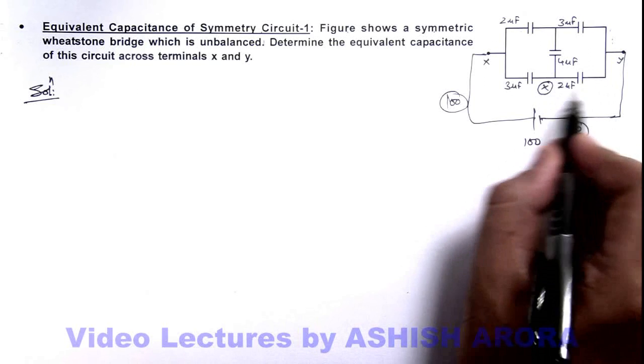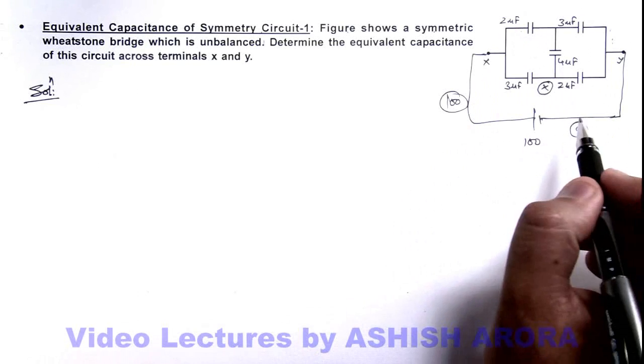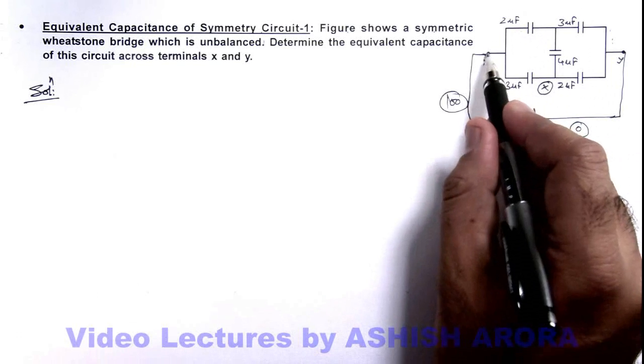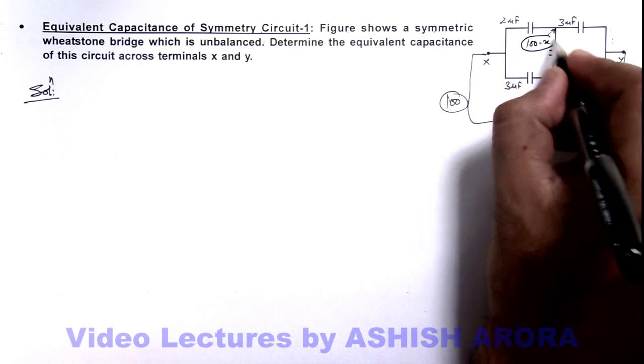Potential difference across this 2 microfarad is x minus zero, here also potential difference should be x. So if here potential is hundred, we can take potential at this node to be hundred minus x.